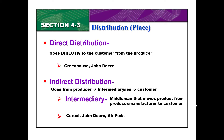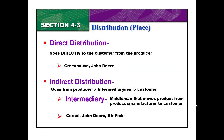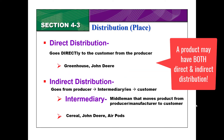John Deere had the implement dealer as an intermediary. Your AirPods could have an intermediary too — if Apple produces them, sells them to Best Buy, and you go to Best Buy to buy your AirPods, that's indirect distribution. It's important to note that a product can have both direct and indirect distribution. John Deere is on both lists, and with AirPods, you could go to apple.com and buy directly from Apple — that's direct distribution. So sometimes a product can do both types of distribution.